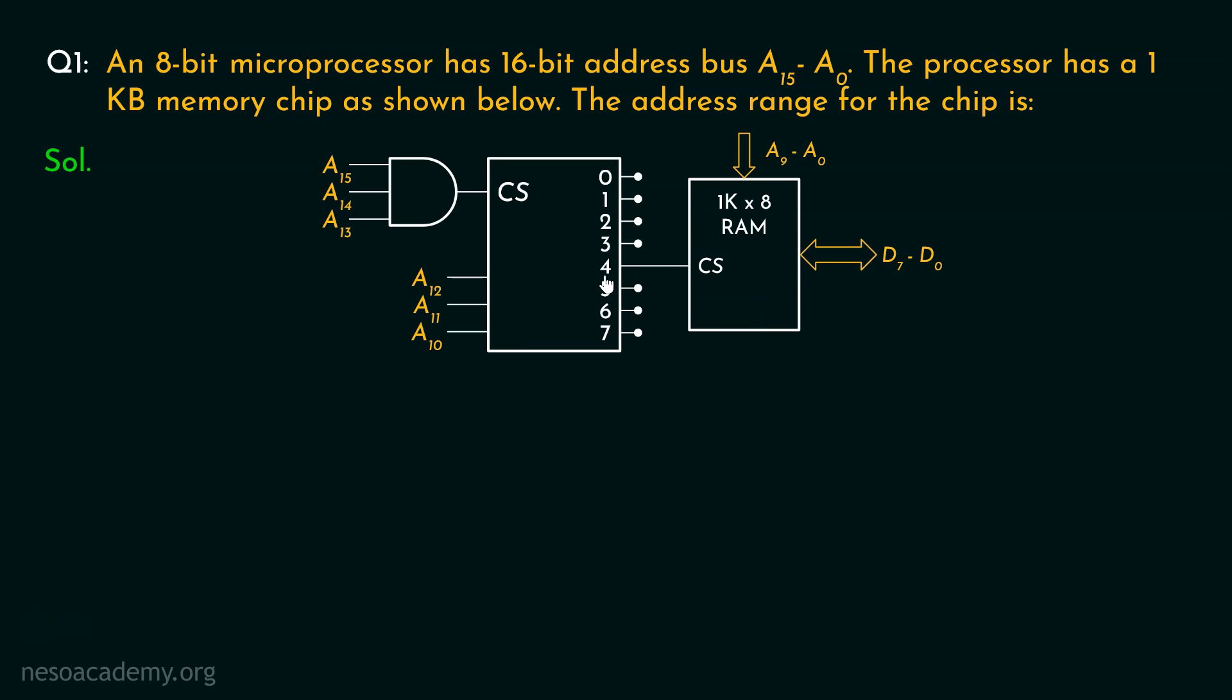So the output line 4 should be selected by these input signals, that is from A12 to A10. And thereafter the remaining pins, A9 to A0, these will help us find the locations within the memory chip, that is the 1KB RAM. Now the microprocessor has 16-bit address bus, ranging from A0 to A15, or we can say in the different way, that is A15 to A0. Now the pins A15, A14 and A13, these are responsible for activating this chip.